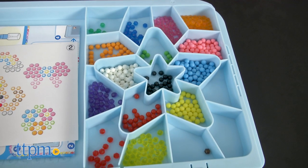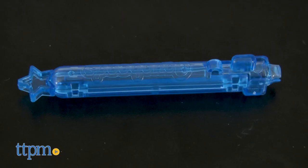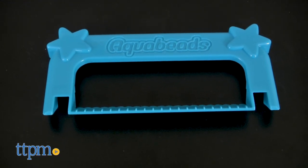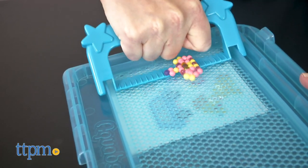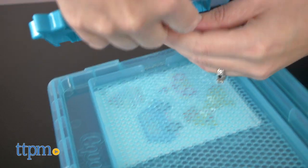This includes 840 beads in a star-shaped bead case, plus a sprayer, a bead pen, two template sheets, and a bead peeler to make it easier to lift your creations off the tray just 10 minutes after you spray them with water.